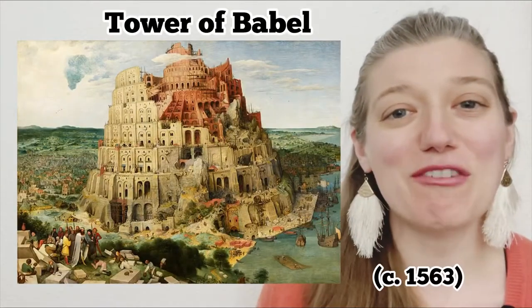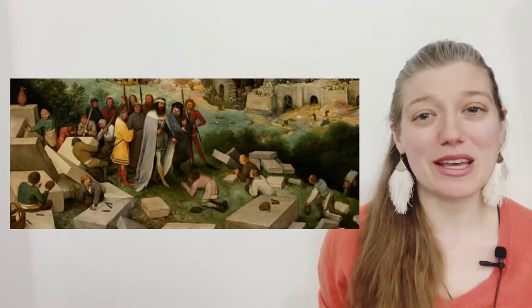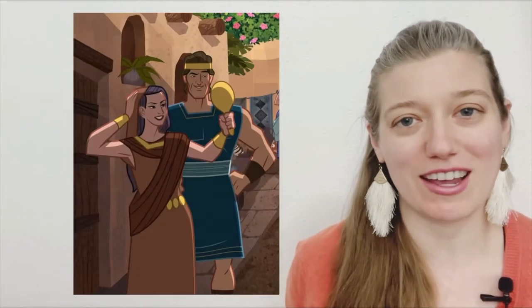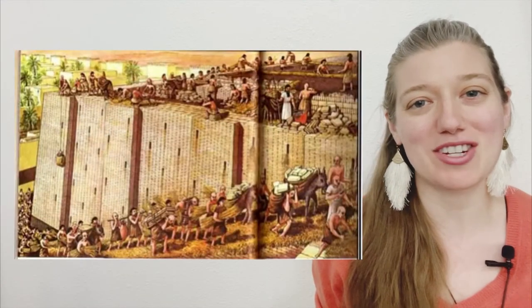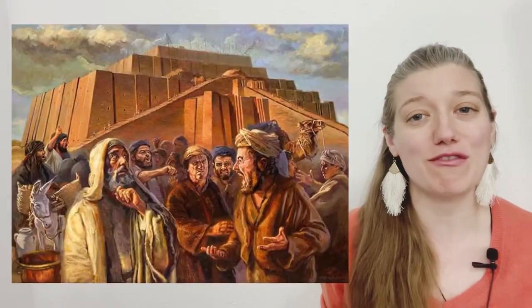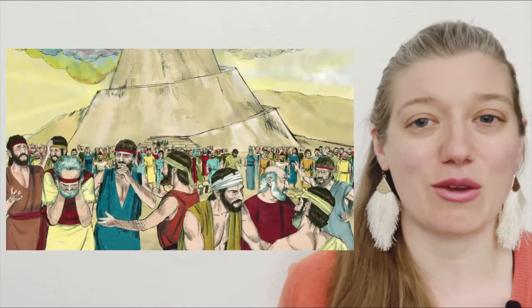The Tower of Babel is one of Bruegel's most famous paintings. It depicts the biblical story of the Tower of Babel. According to the story, a group of people became very arrogant and decided to build an enormous tower in order to show off and become big shots. But as a result of their arrogance, they were punished so that they became confused and could no longer understand each other's languages.